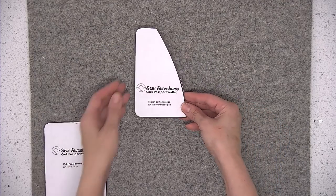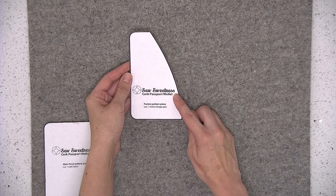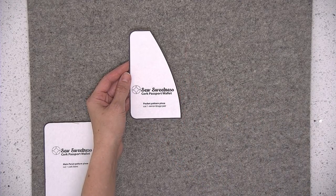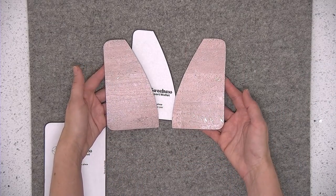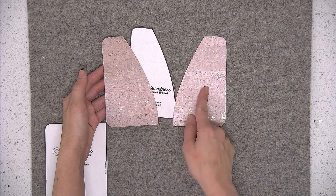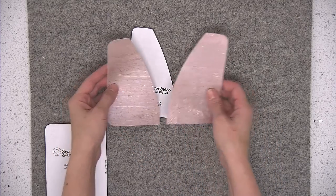Okay so first I'm going to cut out the pocket piece and you need one mirror image pair. So that means two pieces that are mirror images. I've already done the cutting and this is what they should look like. This is what it means by mirror image, kind of a reflection of the two pieces.